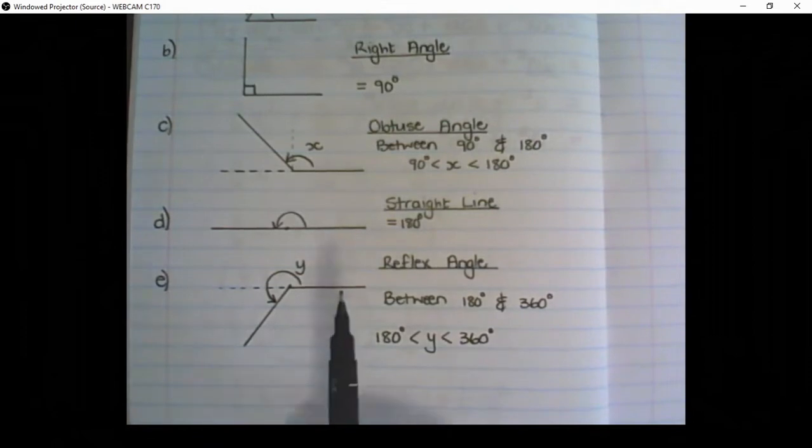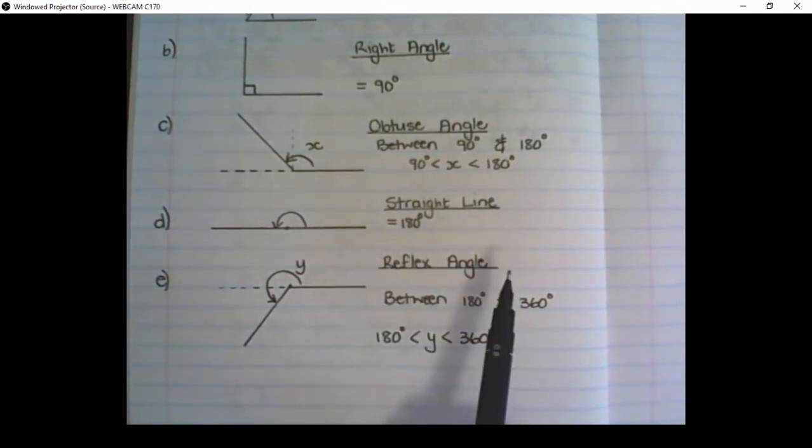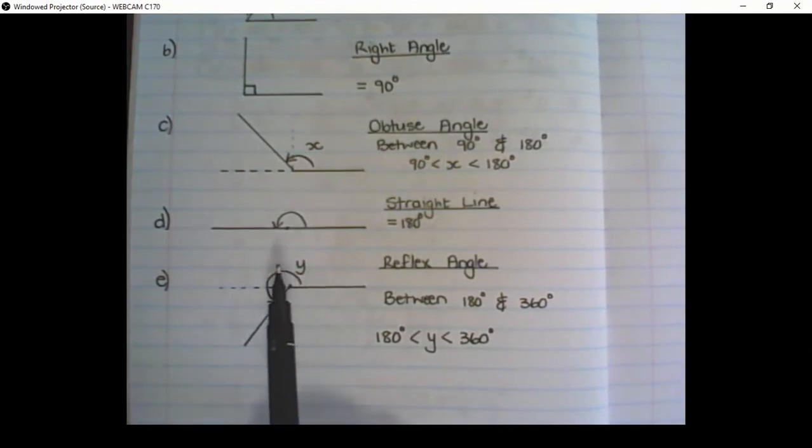Our next angle is called a reflex angle. That is an angle that goes past 180 degrees, but doesn't go completely around to form a full circle. So it is smaller than 360 degrees. So a reflex angle is between 180 and 360 degrees.